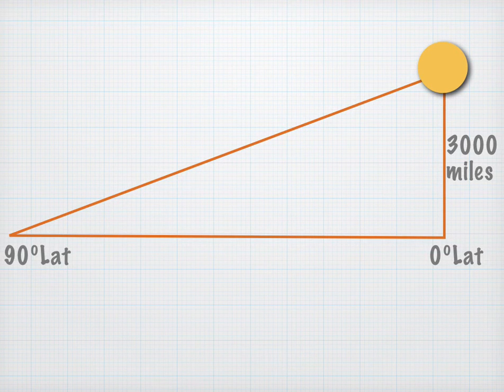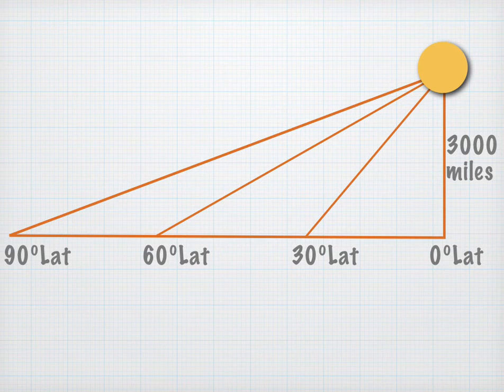And if you want to use a different value for the sun's elevation, that is fine. The calculation will still work nicely. So let's place a couple other observers, one at 60 degrees latitude and the other at 30 degrees latitude.